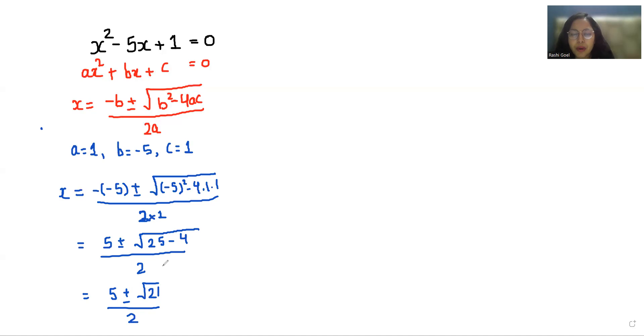21 is not a perfect square, so our two values of x are: x₁ = (5 + √21)/2 and x₂ = (5 - √21)/2. These are the two values of x.